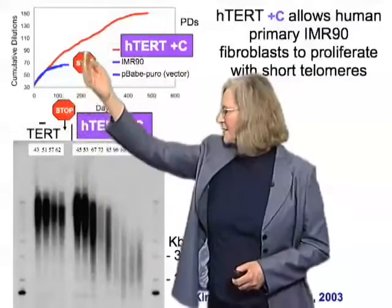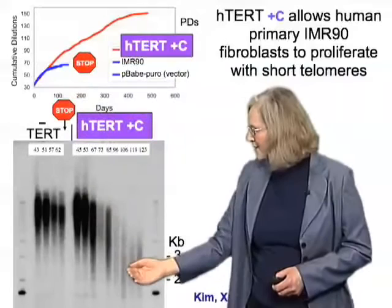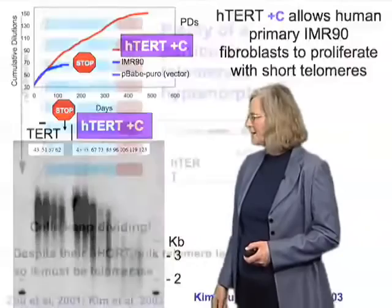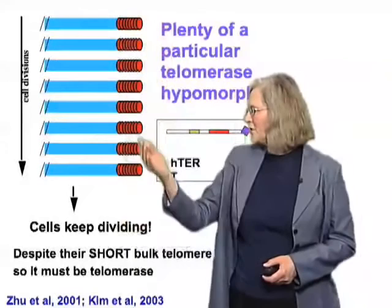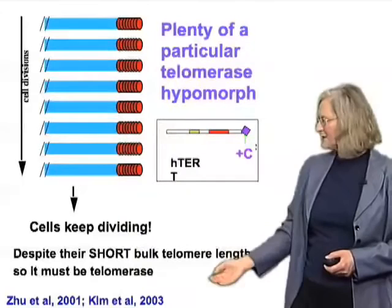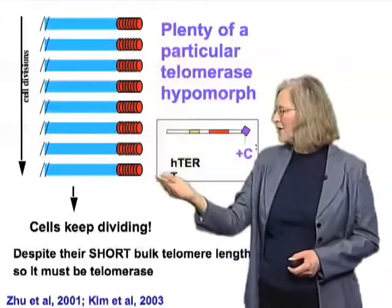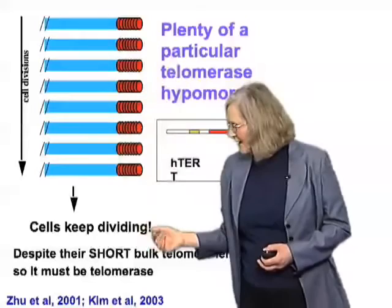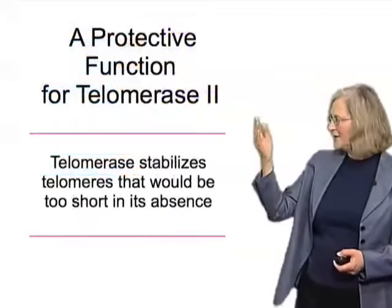Now we added the hTERT. What happened was the cells continue to grow a long, long time. The telomeres shorten and then they steady out at some much shorter length, and through here they're actually growing quite well, but they're growing with much shorter telomeres. In other words, these cells can keep dividing for a long time with very short telomeres, and the difference was they had telomerase being expressed.